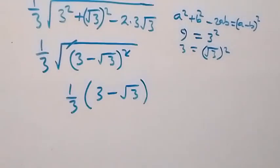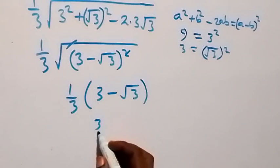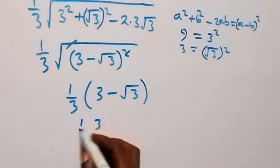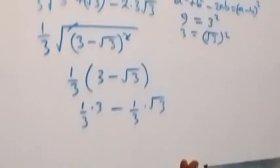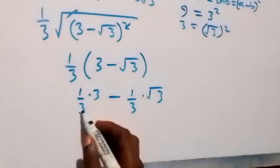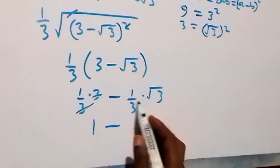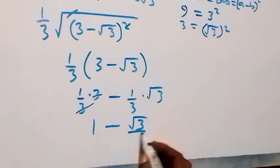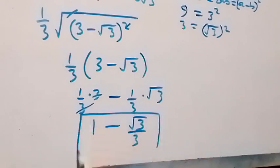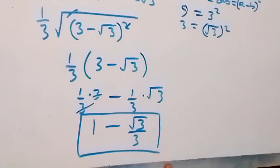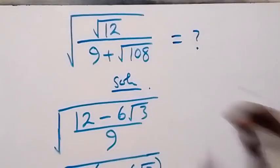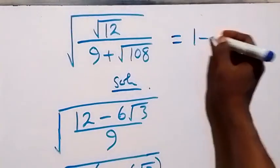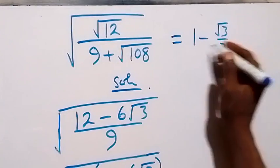And also 1 over 3 — opening this bracket gives 3 times 1 over 3 minus 1 over 3 times root 3. Here the 3 and 1 over 3 cancel to give 1, and this becomes root 3 over 3. So the solution to this problem is 1 minus root 3 over 3. So what we have here is equal to 1 minus root 3 over 3.